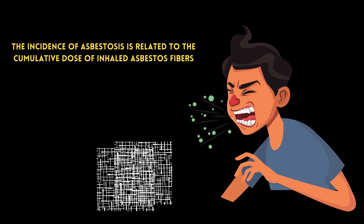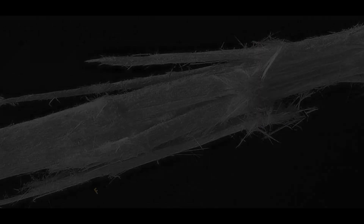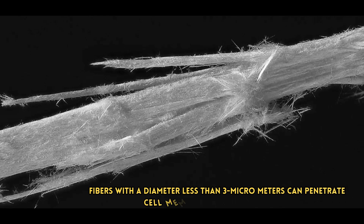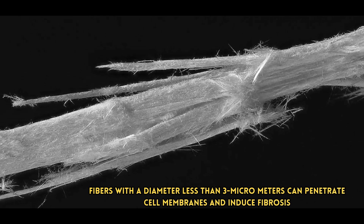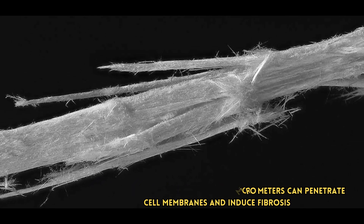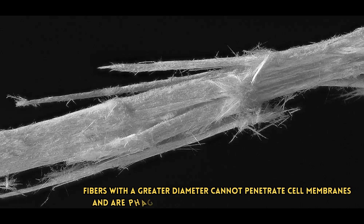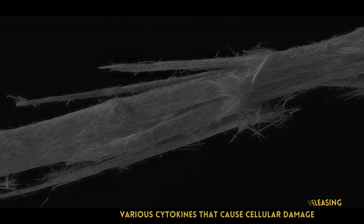The greater the cumulative dose, the higher the incidence. Fibers with a diameter less than 3 micrometers can penetrate cell membranes and induce fibrosis. Fibers with a greater diameter cannot penetrate cell membranes and are phagocytosed by alveolar macrophages, releasing various cytokines that cause cellular damage.